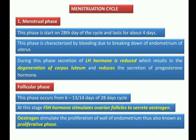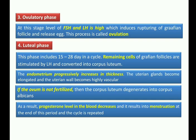The third phase is the ovulatory phase. In this phase, the level of FSH and LH — follicle stimulating hormone and luteinizing hormone — suddenly rises to a peak. This peak level induces the rupturing of the Graafian follicle and the release of the egg. This process is called ovulation. The egg released at this stage is actually the secondary oocyte.